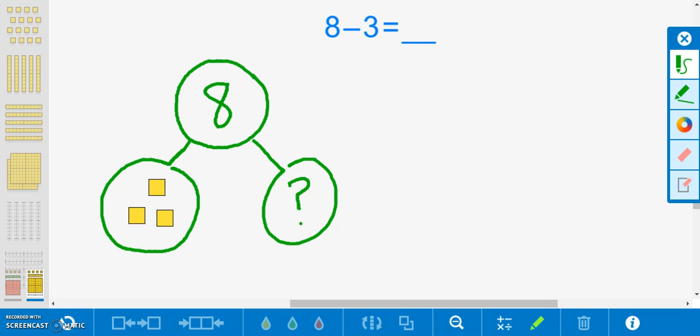The final section of this video will demonstrate the number bond strategy using abstract models. First, I will create a number bond right next to the current pictorial model and write the number eight as our whole.